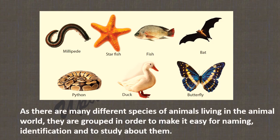As there are many different species of animals living in the animal world, they are grouped in order to make it easy for naming, identification, and to study about them.